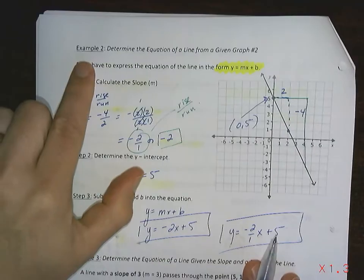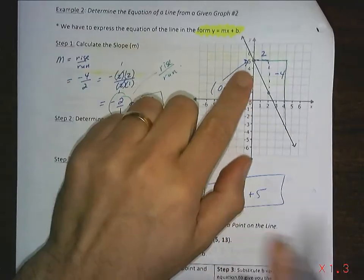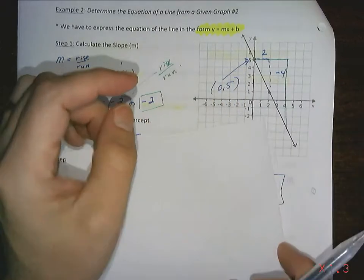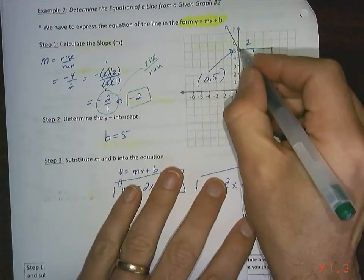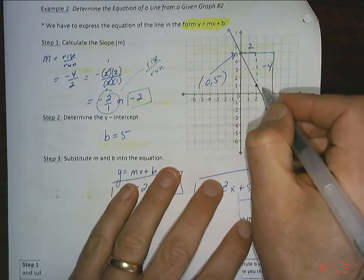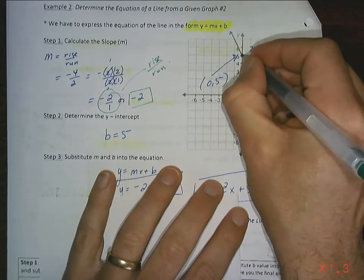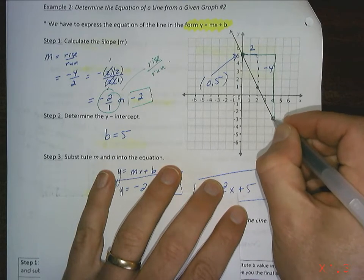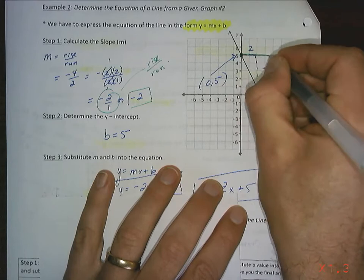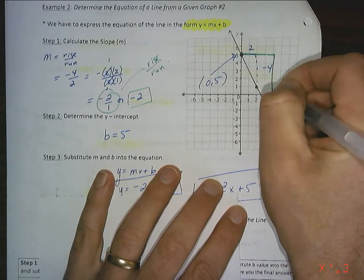Hi, back to this example 2 just for a second. I want to show something I was talking with the kids in class. Once again, I picked the rise and run between these two points. These were the two points that I picked. As long as it's drawn correctly, I can pick any two points.